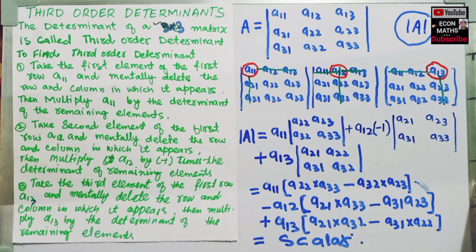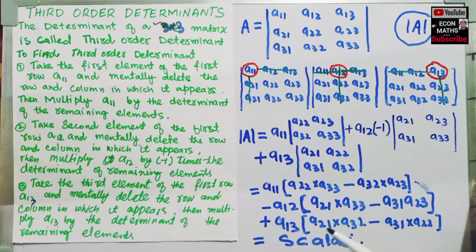This is how the determinant of a 3 by 3 matrix is found.